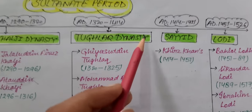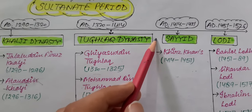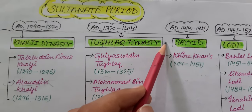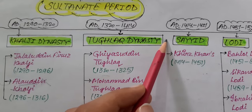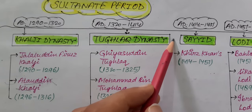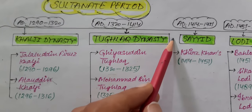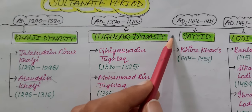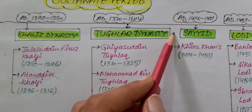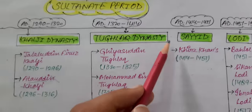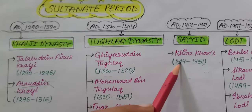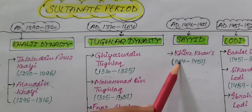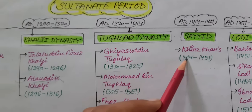The next dynasty was the Sayyid Dynasty, covering the time period from 1414 to 1451 AD. The notable ruler was Khizr Khan.